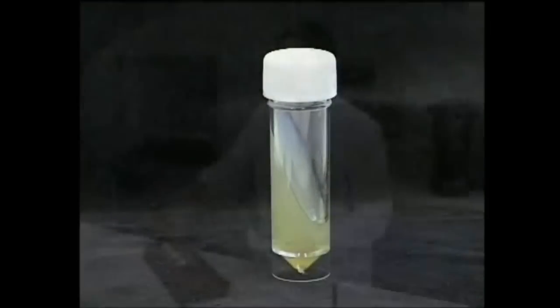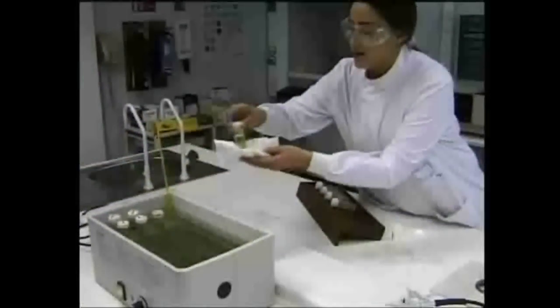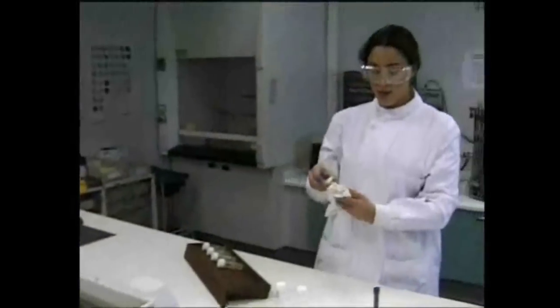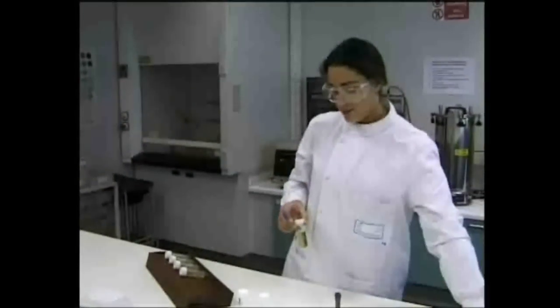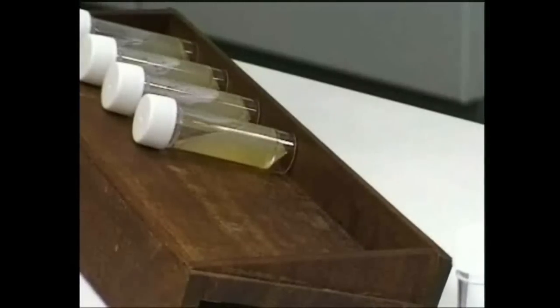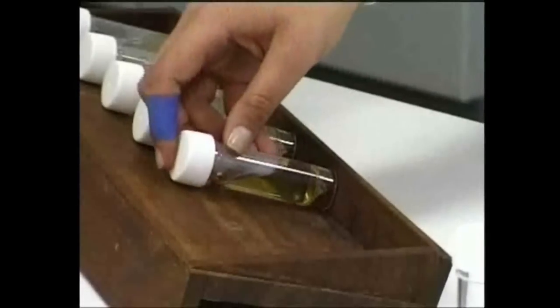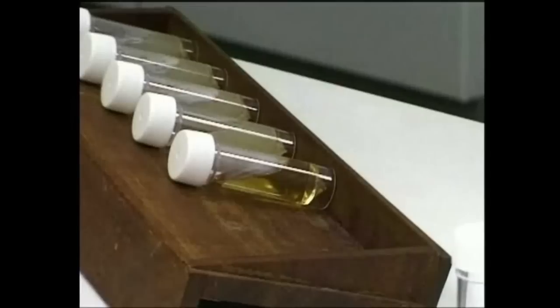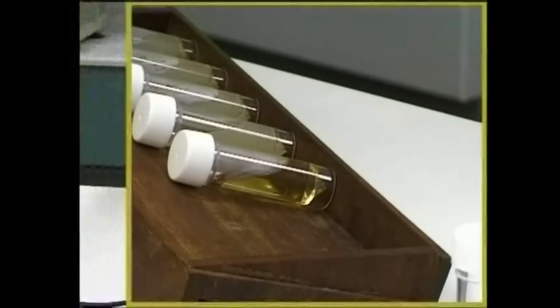The slope is made by allowing molten agar to set in an inclined bottle. The slope shouldn't reach more than two-thirds of the length of a bottle. Slopes give a large surface area to a small volume of medium, usually 10 cubic centimeters. In other words, they maximize the area available for bacterial growth.